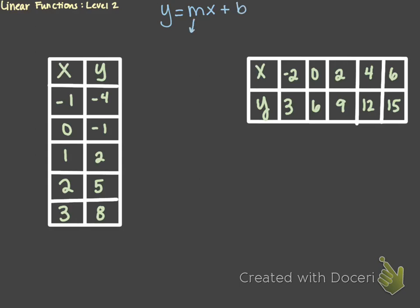M represents your slope — in other words, that rise over run — and b represents your y-intercept, or otherwise your starting value.